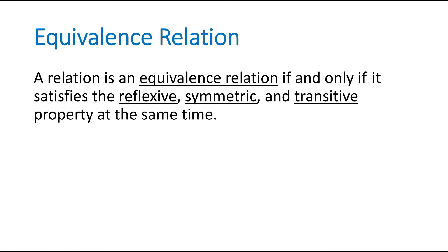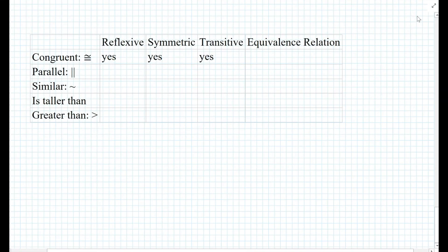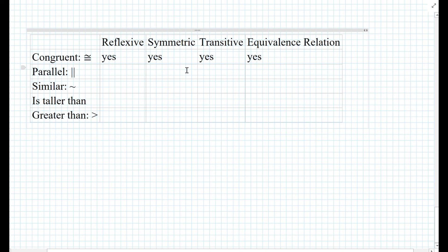Let's look at the definition. A relation is an equivalence relation if and only if it satisfies the reflexive, symmetric, and transitive property at the same time. Let's look at this example: the word congruent. If you look at this relation, it does satisfy the reflexive property, the symmetric property, and the transitive property, as shown here in the table. Therefore, yes, it is an equivalence relation.